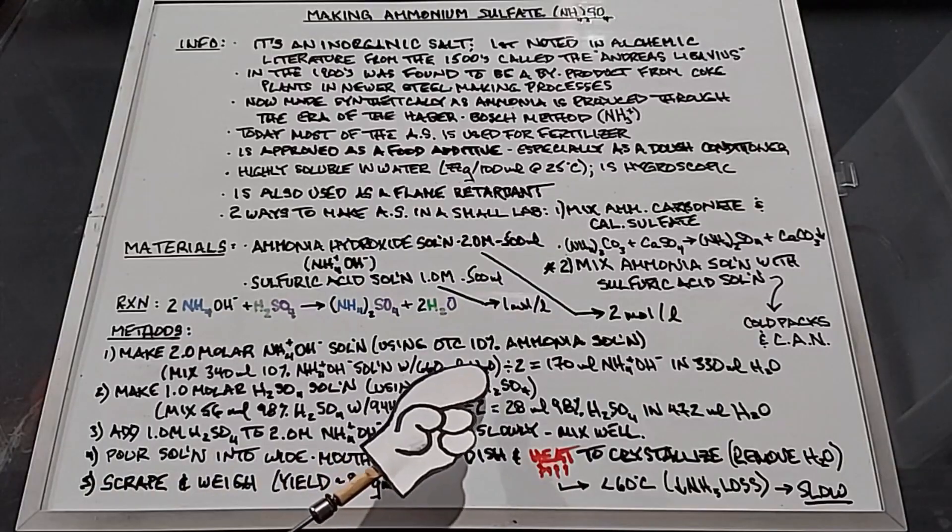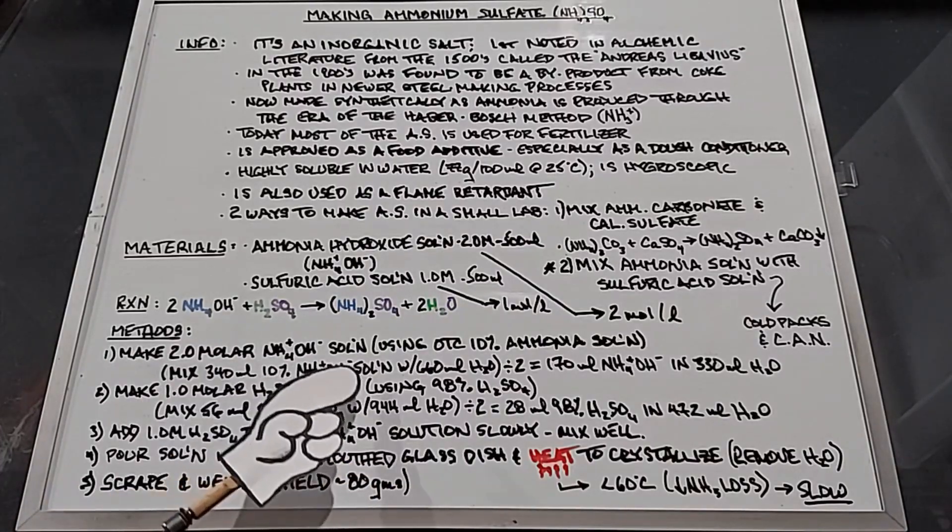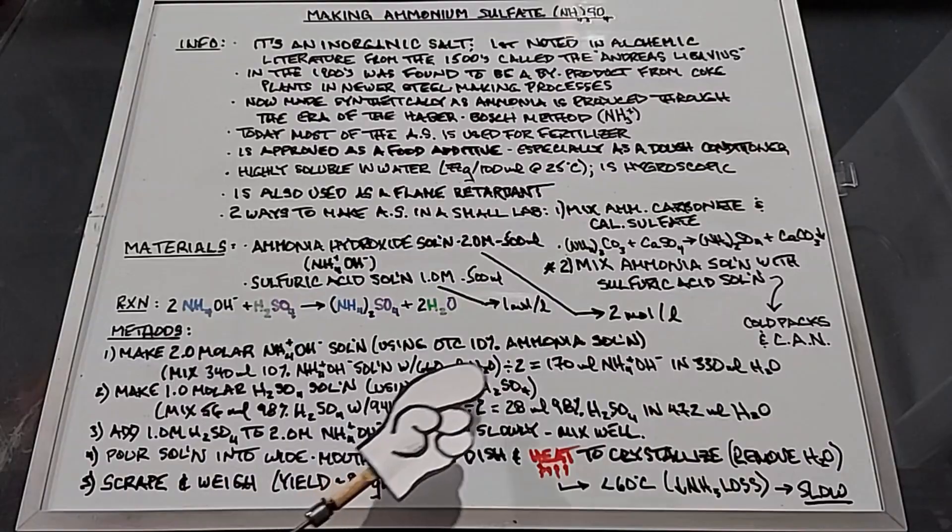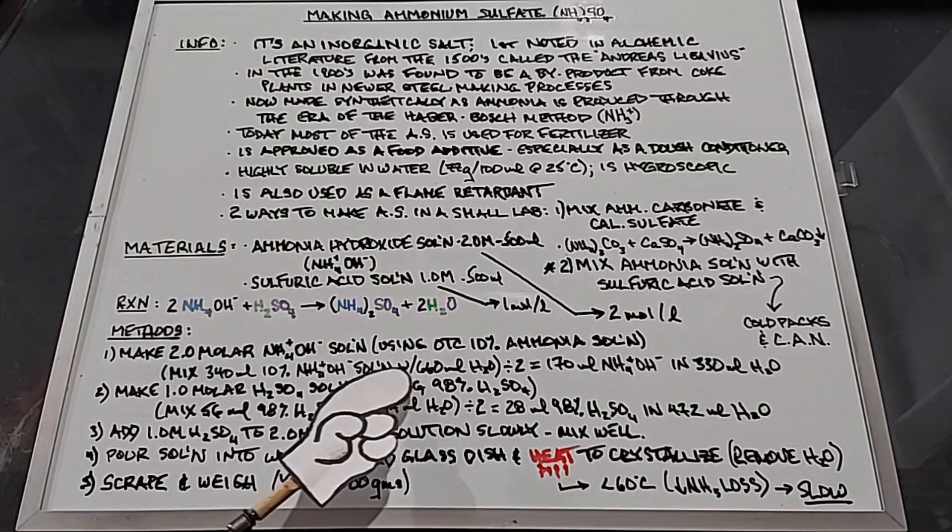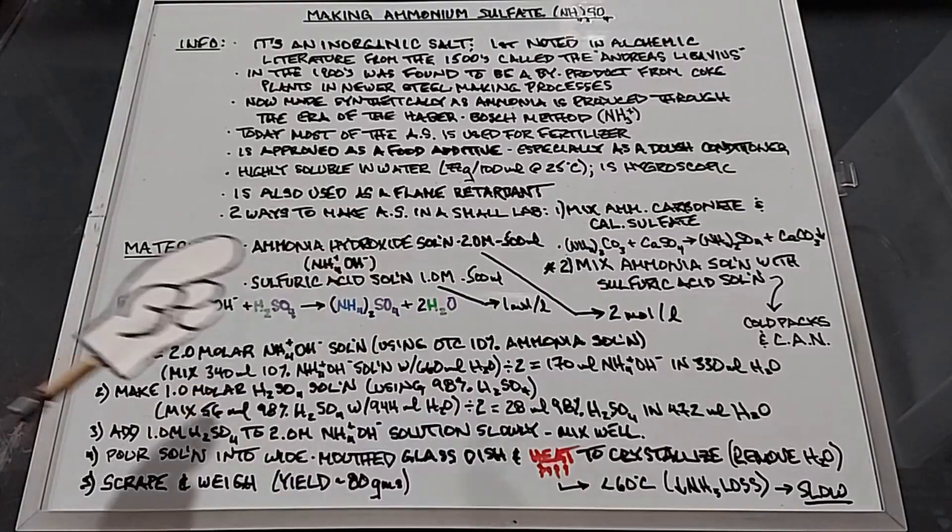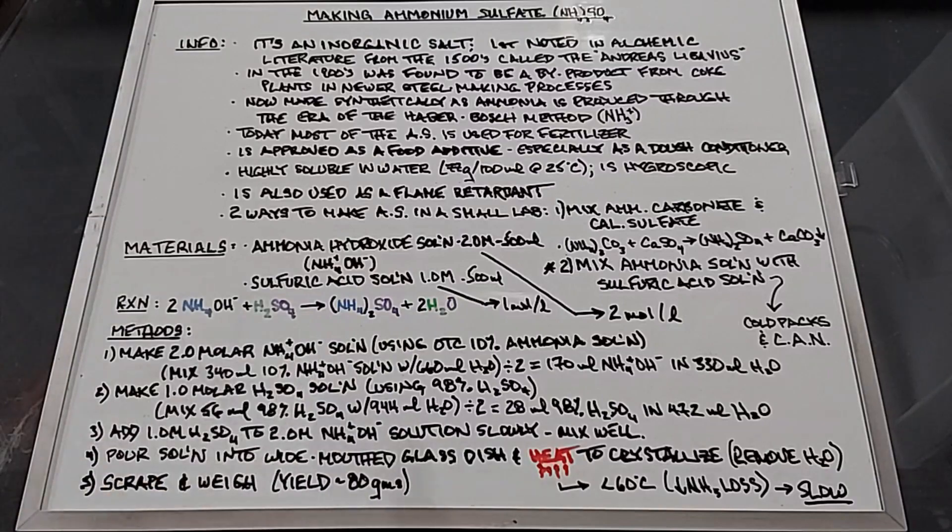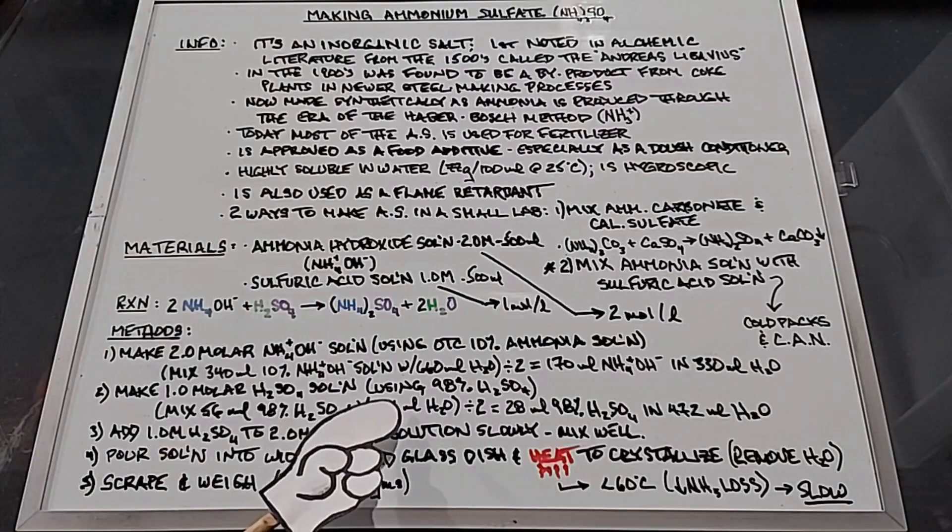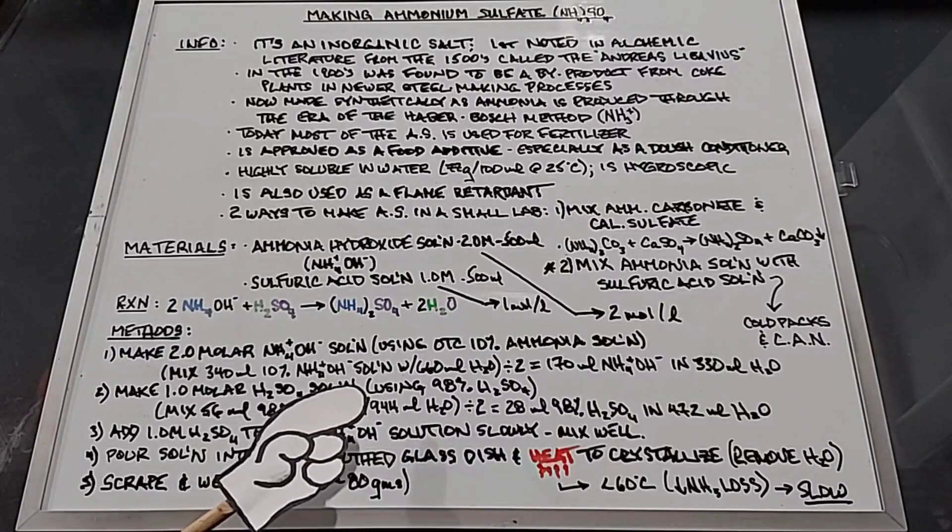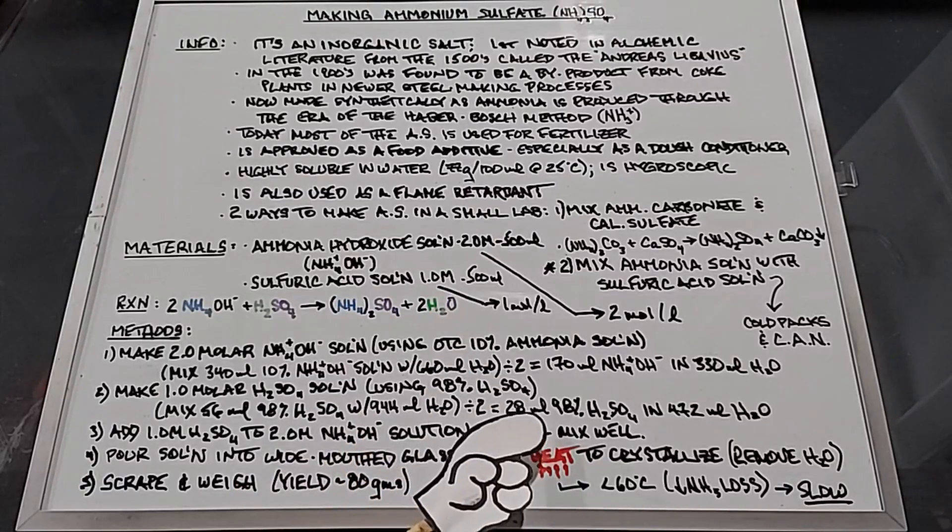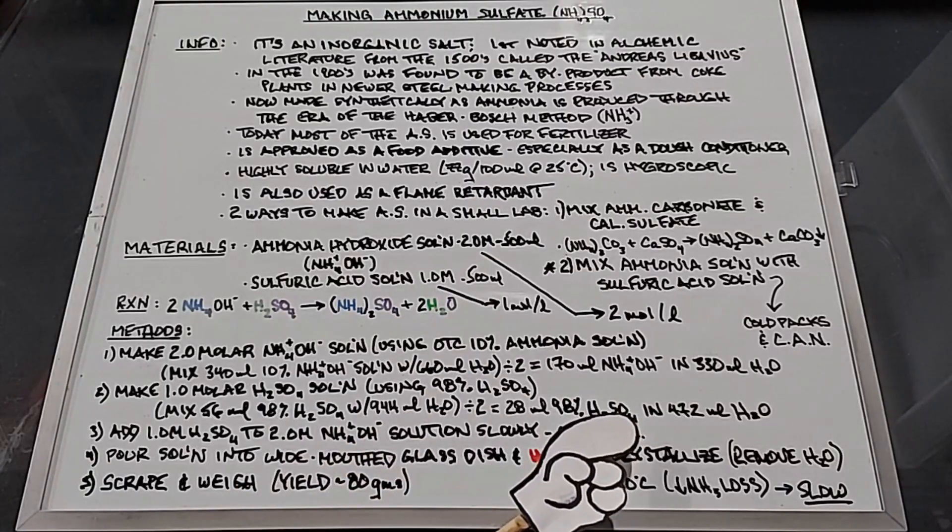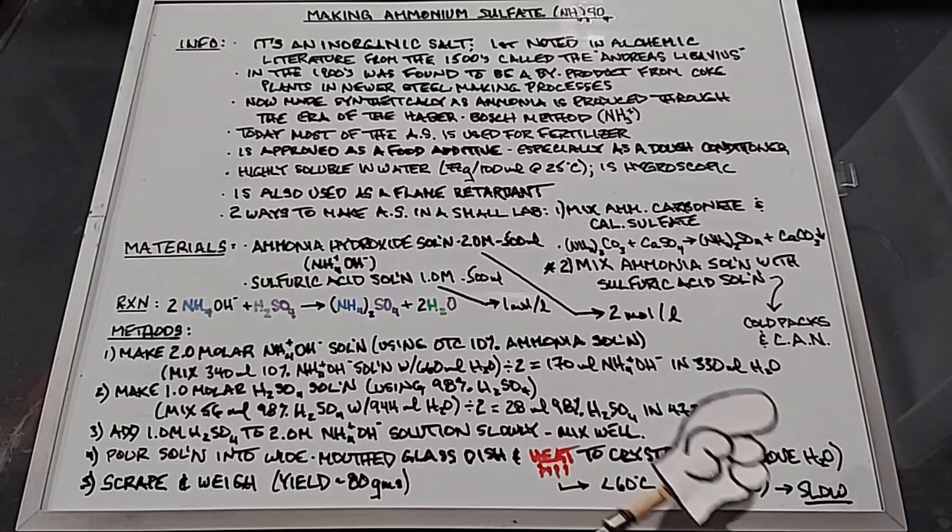Number two, we're going to make a one molar sulfuric acid solution. I have 98% sulfuric acid. To make our one molar solution I'm going to mix 56 milliliters of the 98% sulfuric acid with 944 milliliters of water. If we divide it in two we have 28 milliliters of 98% sulfuric acid solution mixed with 472 milliliters of water, and you always add the acid to the water when mixing these two.